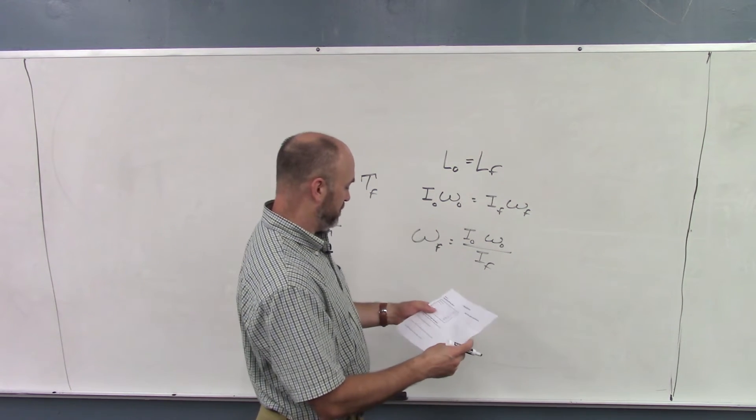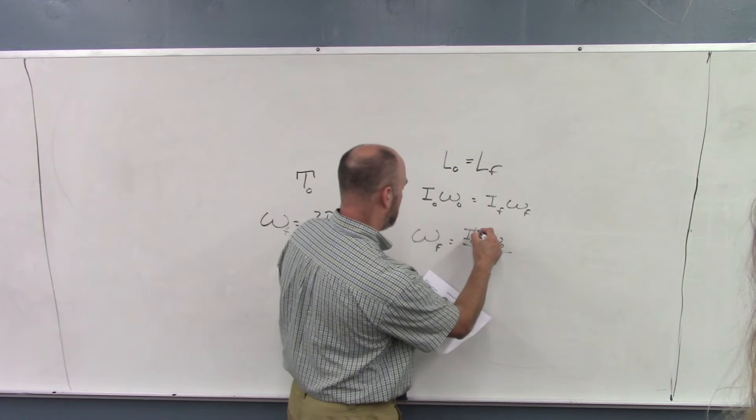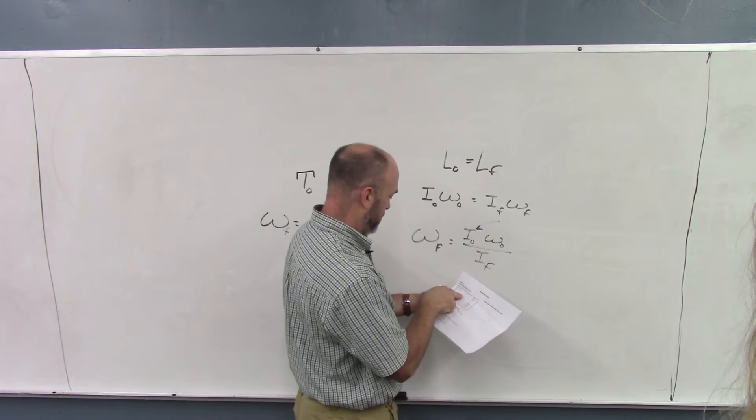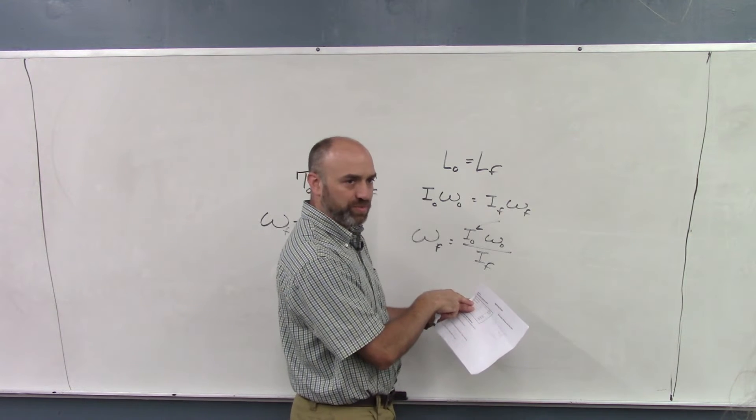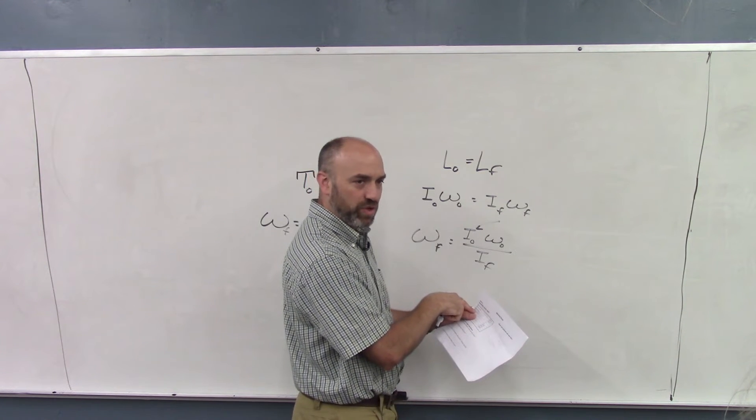So this is just going to be the disc with, which one is it? It's the disc with the pulley that's spinning to start with, I think, right? Can we drop the other one on?